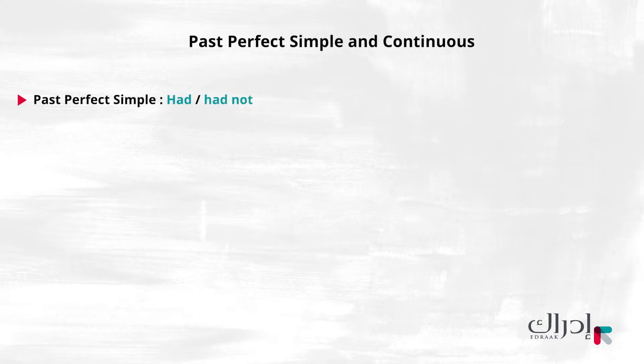The past perfect simple is used to mean that one event happened before another in the past. The event that happened first is put in the past perfect form. We form this verb by using the auxiliary verb 'had' plus the past participle. Had. Had not. Followed by the past participle.